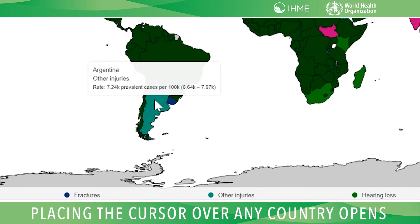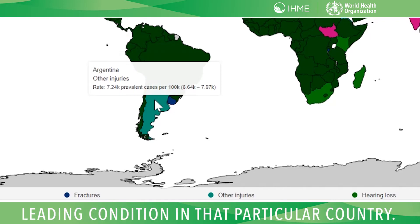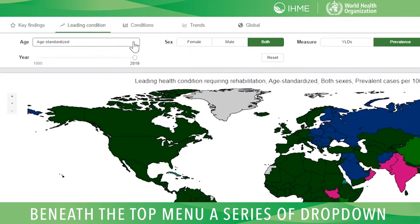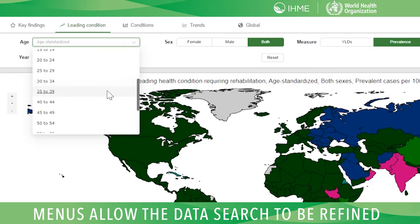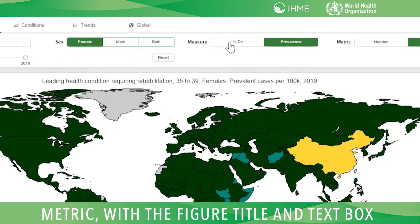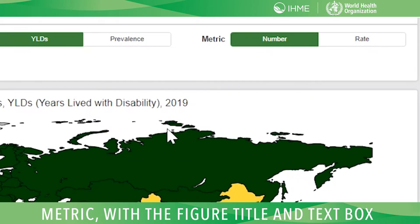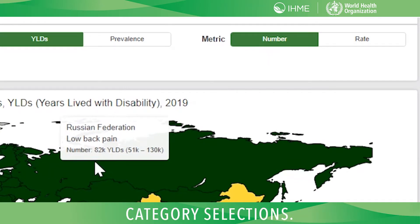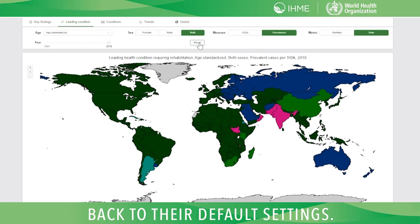Placing the cursor over any country opens a text box containing information about the leading condition in that particular country. Beneath the top menu, a series of drop-down menus allow the data search to be refined according to age, sex, and the measure or metric, with the figure title and text box information changing according to category selections. A reset button changes all categories back to their default settings.